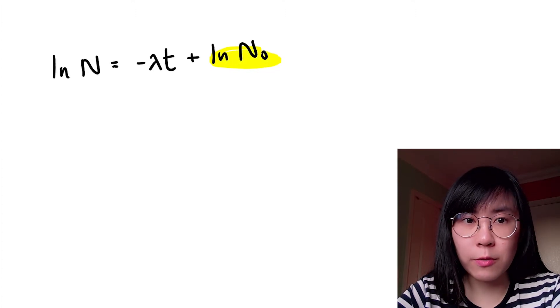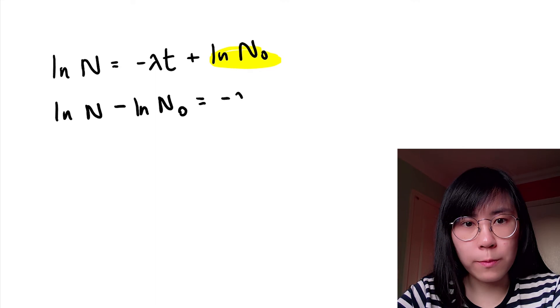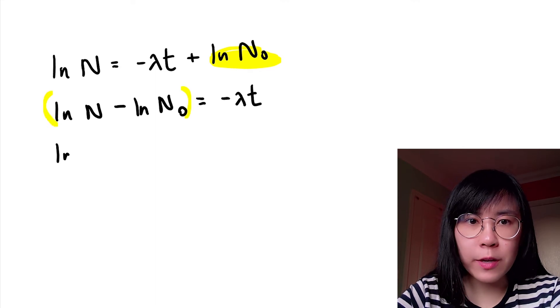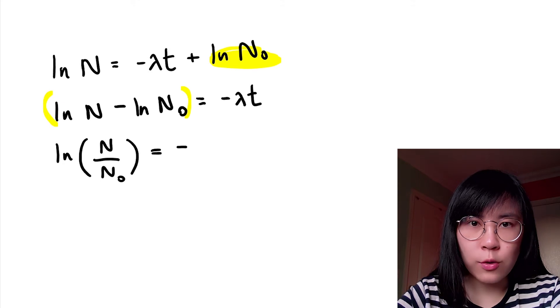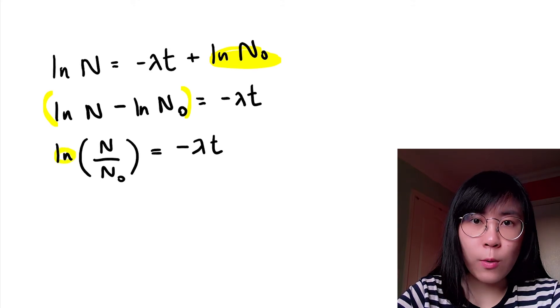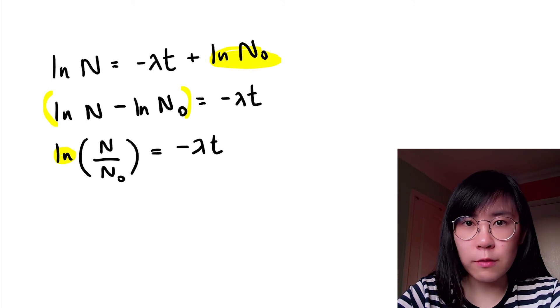Let's take log of N sub zero to the left-hand side so that we can apply rule number one. This bracket now becomes log of N over N zero. Using rule number two, we can now undo this log by applying exponents to both sides of the equation.